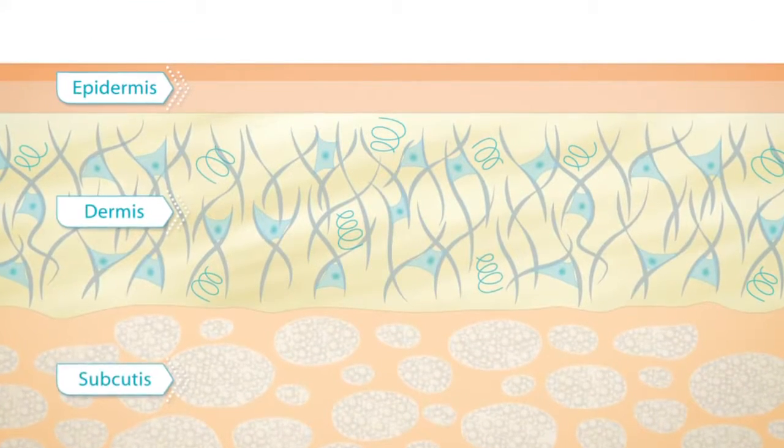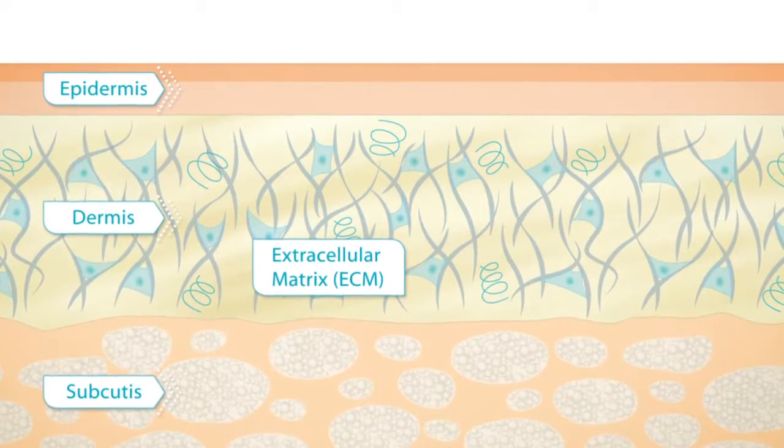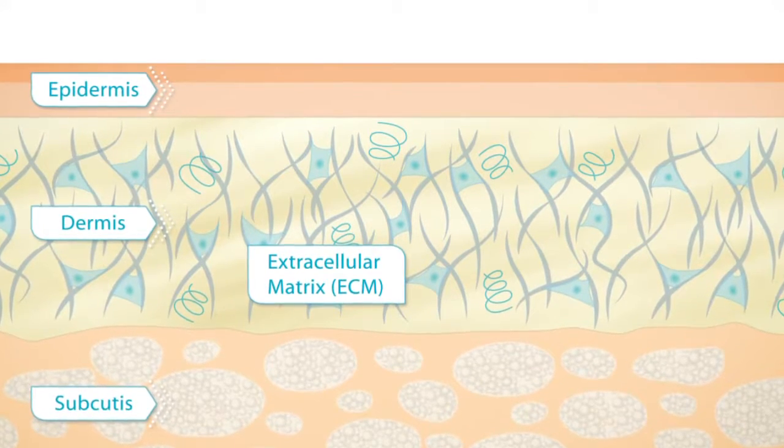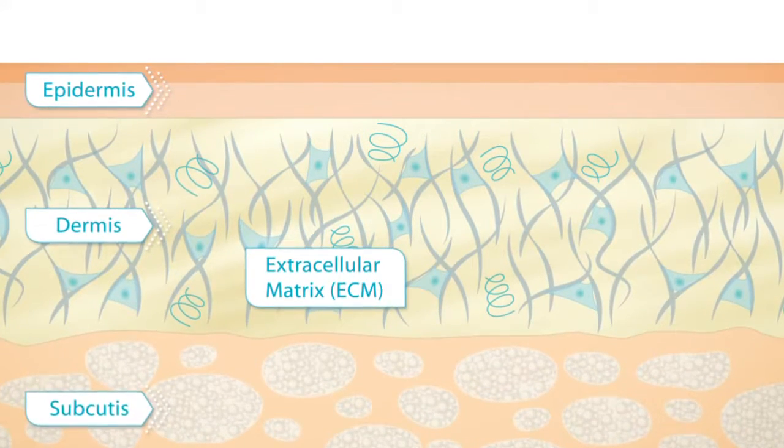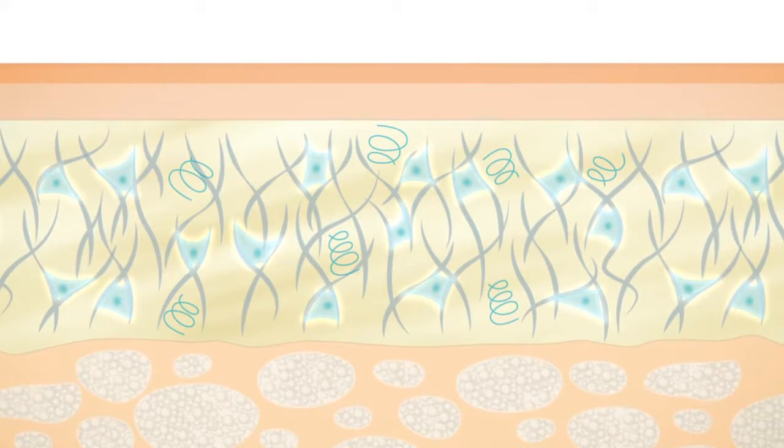The structure of the skin is supported by the extracellular matrix, or ECM for short, which gives the skin its unique elasticity and tensile strength. The ECM is a complex scaffold composed of proteins and fibers, mainly produced by fibroblasts.